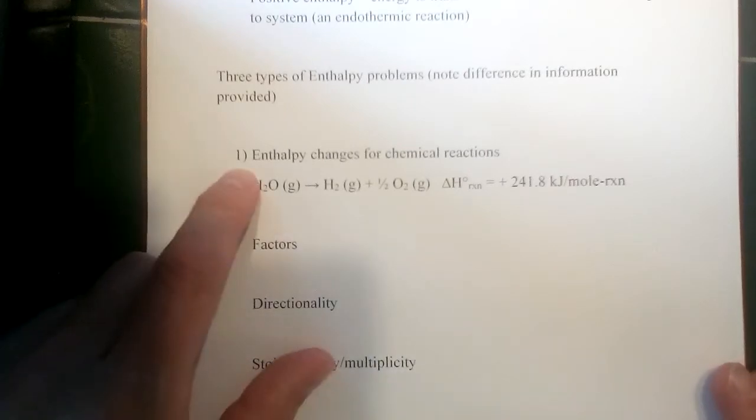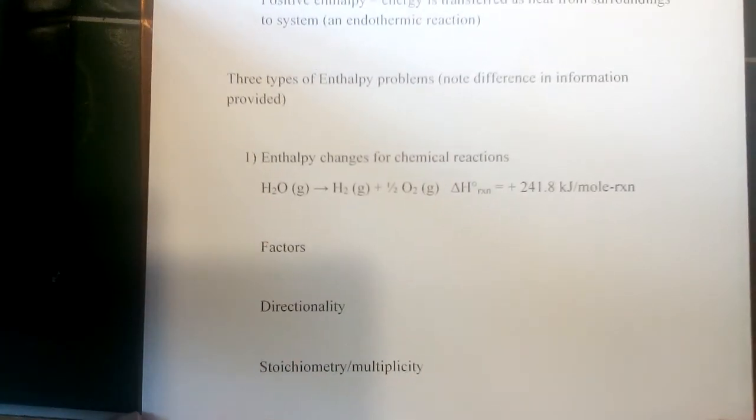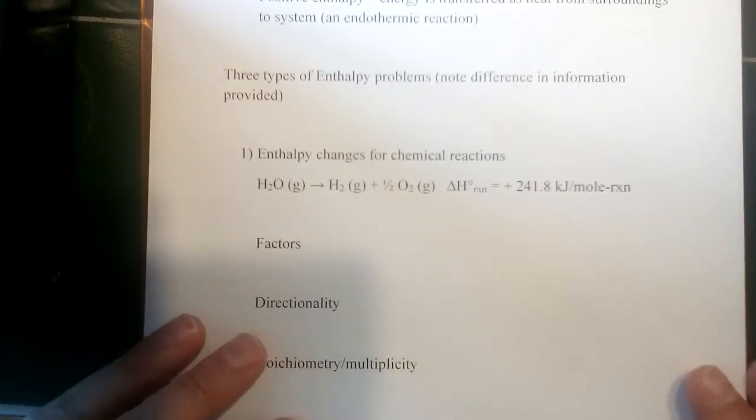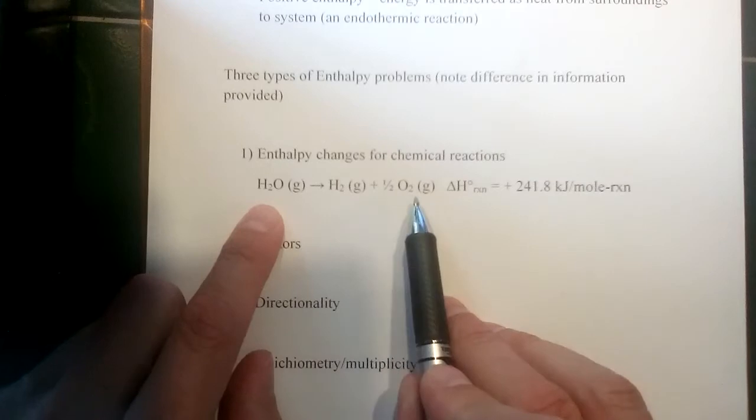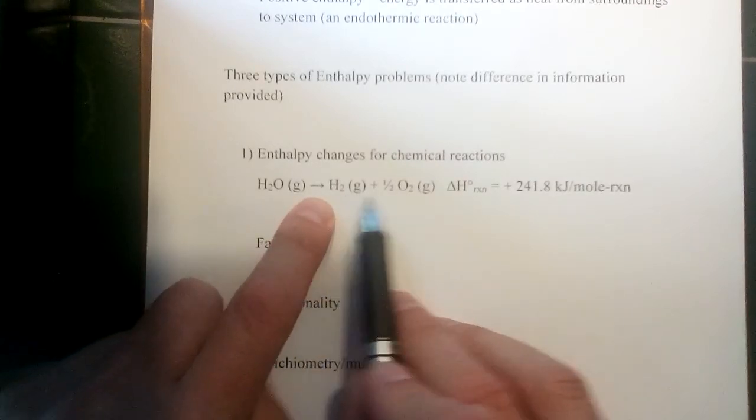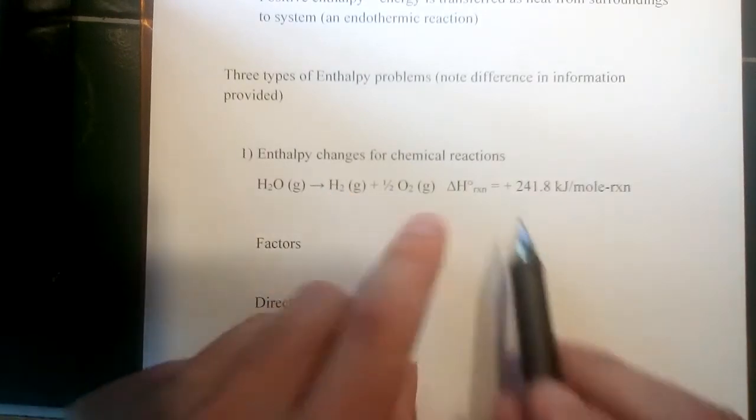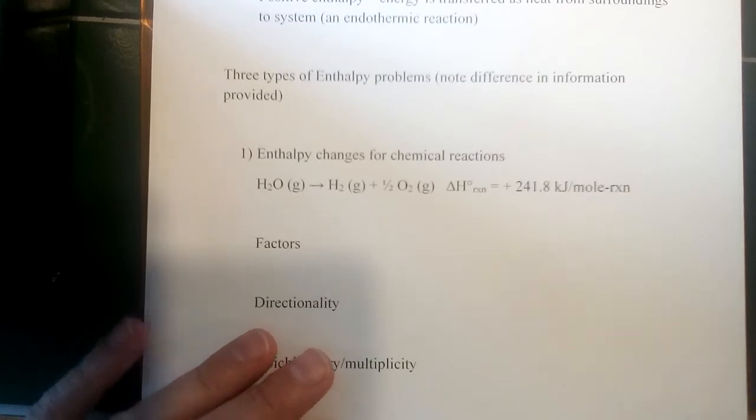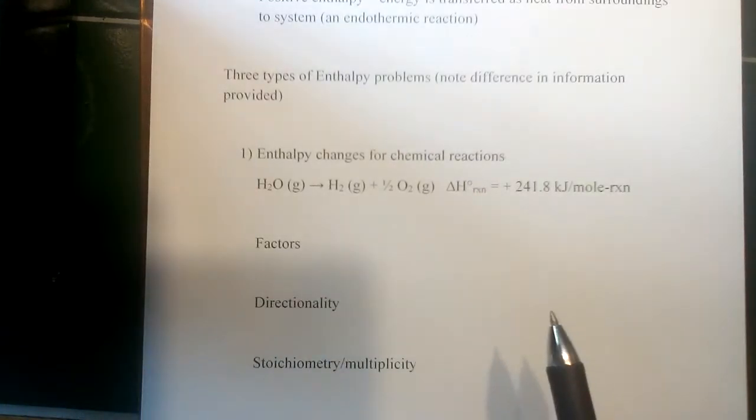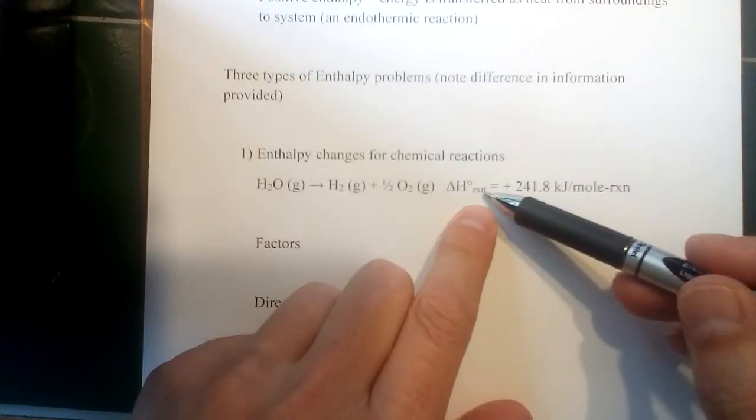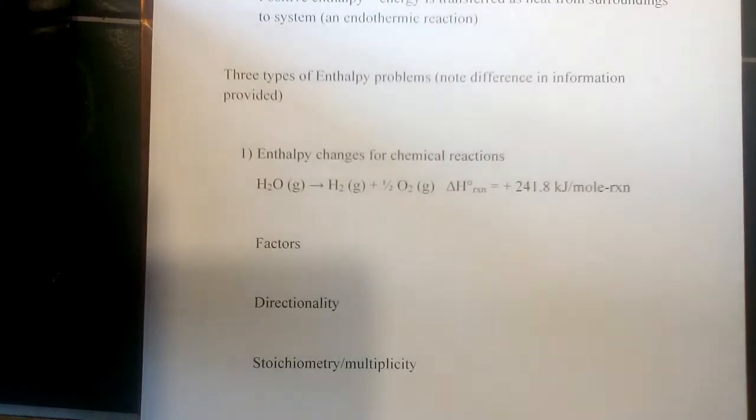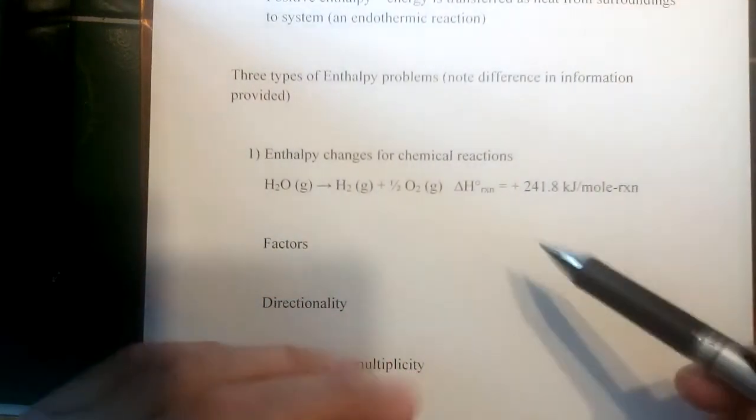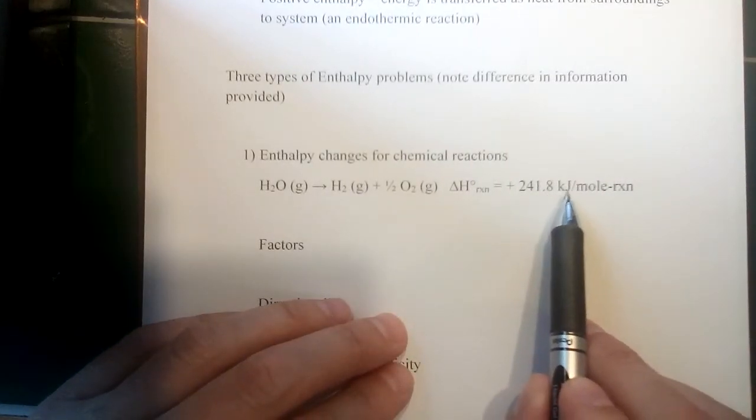Now the first type of problem here, with the one there, is just giving us information about how an enthalpy change is associated with a chemical reaction. So in this case, we're given a reaction, and water in the gas phase is breaking apart into hydrogen and oxygen, both also in the gas phase. And right there, we're given the enthalpy change associated with that reaction. So delta H, there's a little degree sign here, which means standard conditions. Standard versus non-standard conditions is a little more complicated, something we will talk about when we get to a second chapter on thermodynamics in CHEM 2, if you stick around for CHEM 2. And then a little subscript Rxn to say this is for a reaction. We'll see there are other types of enthalpy that we can define that aren't specifically related to a reaction. So in this case, that's positive 241.8 kilojoules per mole.